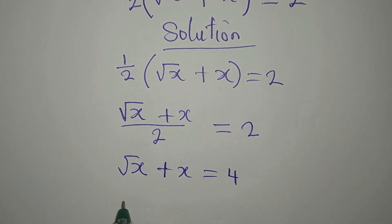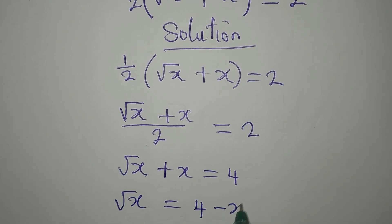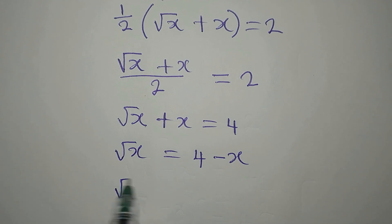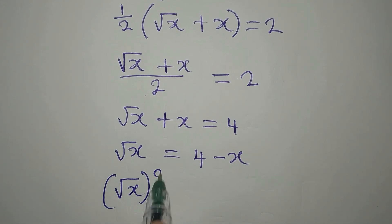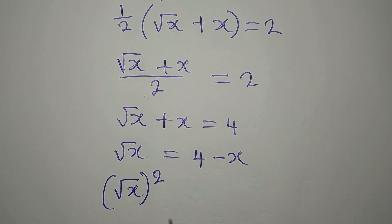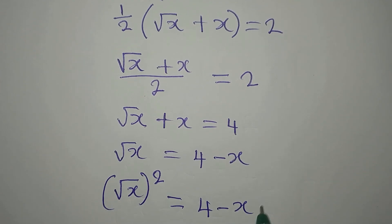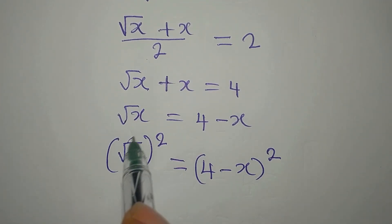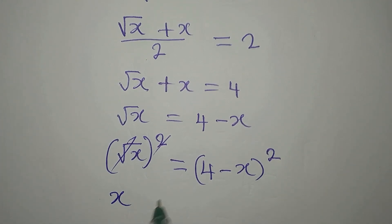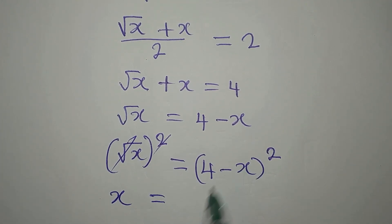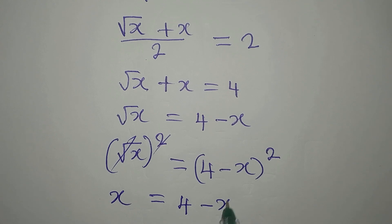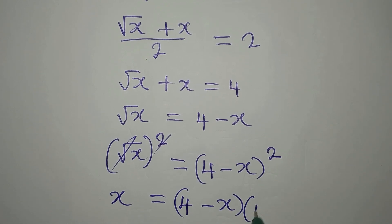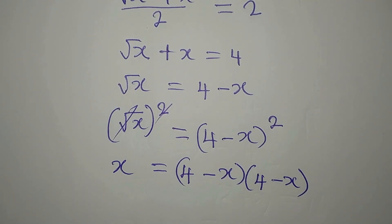Let's make root x the subject first, so we have root x equals 4 minus x. The next target is to remove the square root, and we do that by squaring both sides. So we have x on the left, and then (4 minus x) times (4 minus x) on the right.